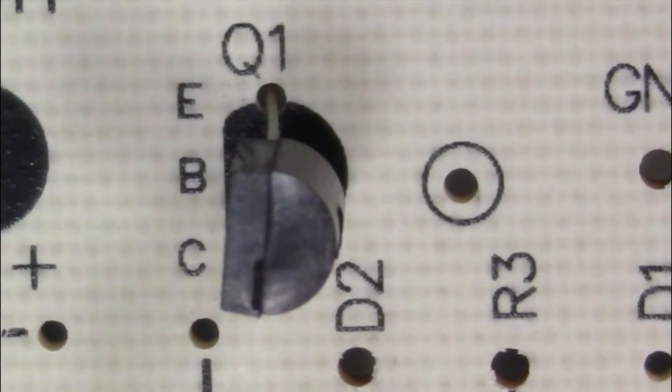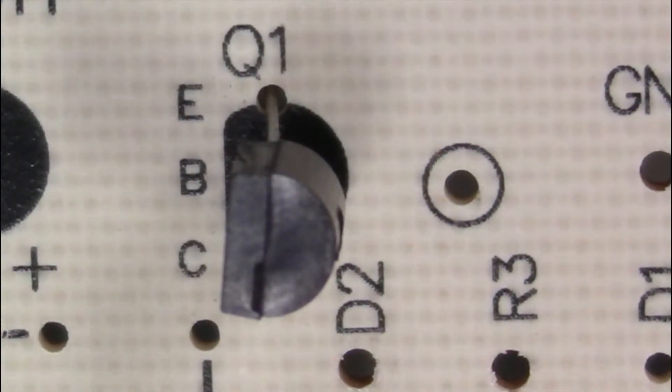The PN2222 transistor fits in the PCB as shown. The emitter, base, and collector are labeled on the PCB.